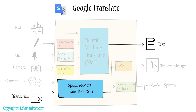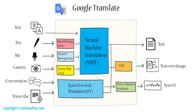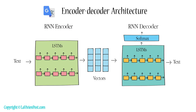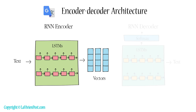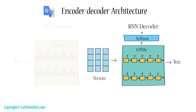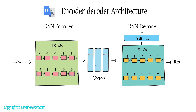Some components work together as a cascaded system, while some are end-to-end models. This video will explain the technologies used in Google Translate. The basic form of neural machine translation is an encoder-decoder architecture, where an encoder converts input words to vectors and a decoder converts vectors to words in another language. Both encoder and decoder use recurrent neural networks.